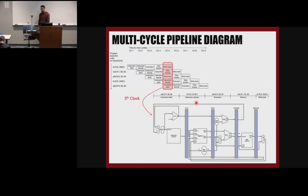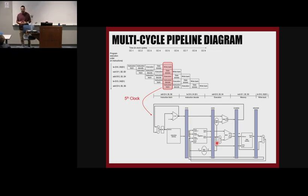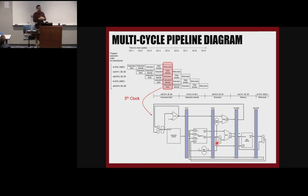Looking at this diagram, the first thing we changed was what we do with the destination register — in the case of load word, we have to send it to the pipeline. In this type of architecture we are not even talking about the control signals yet. We talked about the control unit; the entire question about what signal corresponds to each instruction was about how the control unit works. But now we need to talk about the control signals as well.